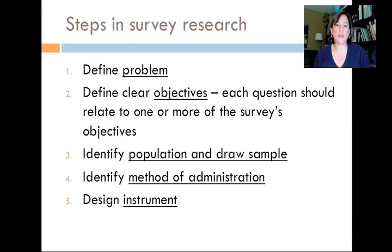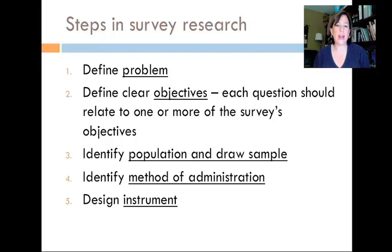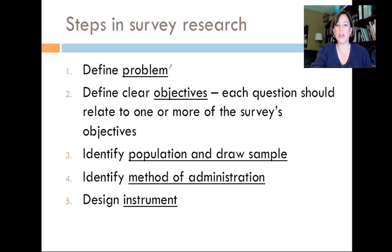The steps of survey research are not very different from the overall components of the research process. First, we have to define the research problem — what is it that you want to research? Does that problem necessitate collecting data by way of a survey? You don't want to ask questions on a survey for which you really don't need to use the answers. The next step is to define clear objectives. Each and every question on the survey should be related to the research objectives — don't ask extraneous information.